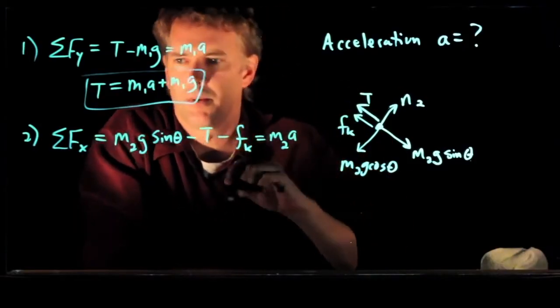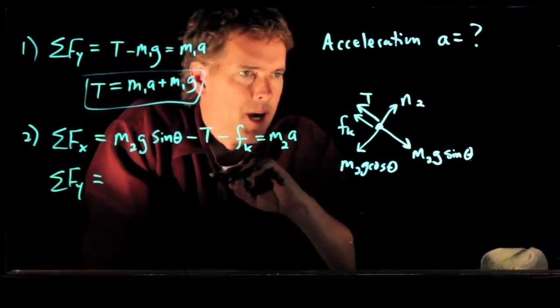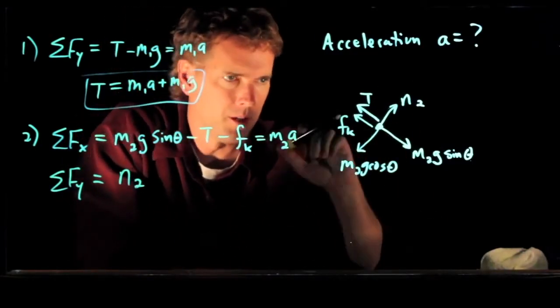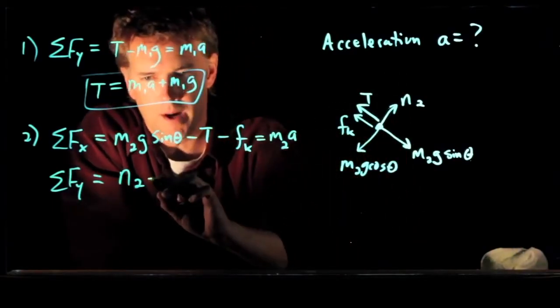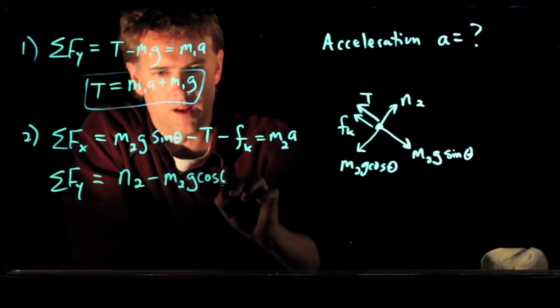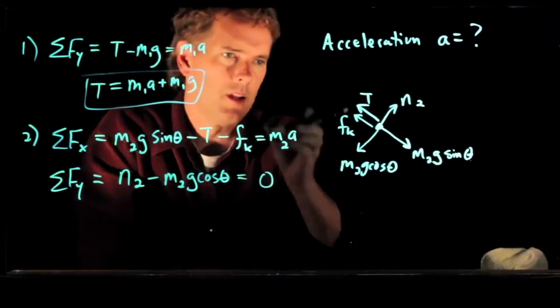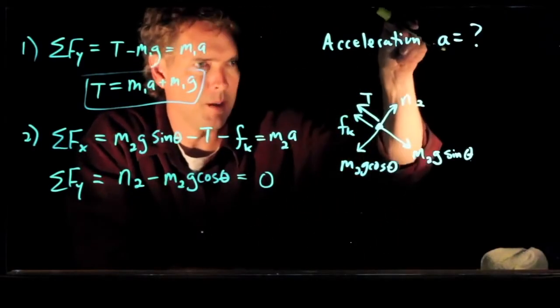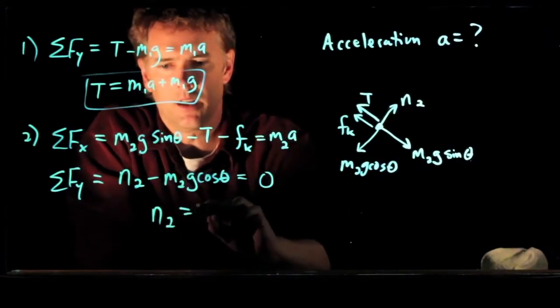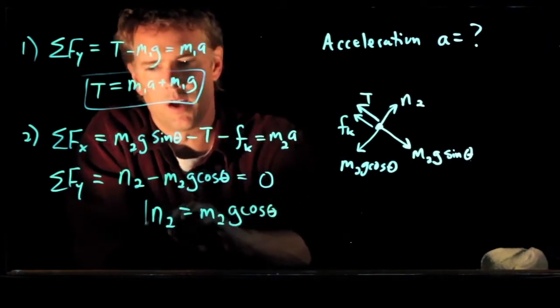What about the sum of the forces in the y direction for that box? We've got N2 in the positive y. Remember, we're in this rotated coordinate system. So N2 minus M2g cosine theta, and all of that is equal to zero because it's staying on the incline. It's not jumping up off the incline or falling through the incline. And so now we immediately know what the normal force is on that box. It's M2g cosine theta.